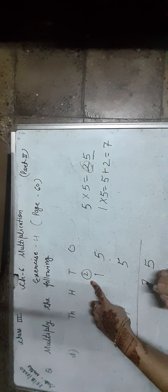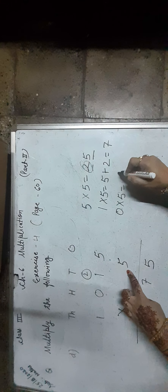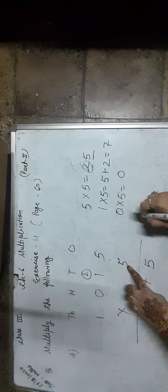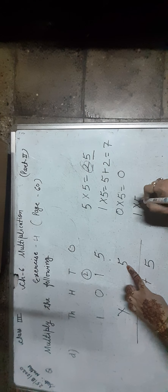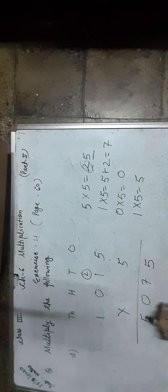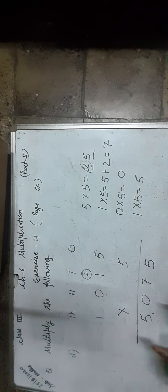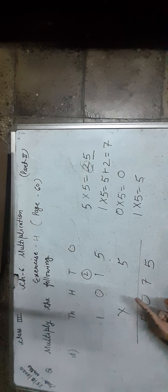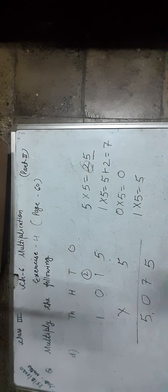Now, 0 × 5 is equal to 0, so we write 0 in the 100s place. Now, 1 × 5 is equal to 5, so we write 5 in the 1,000s place. The product of 1,015 and 5 is 5,075.